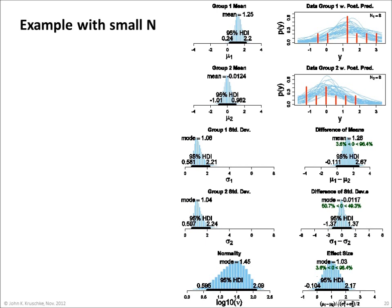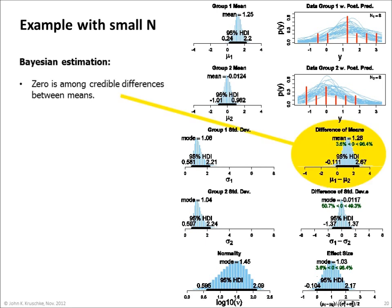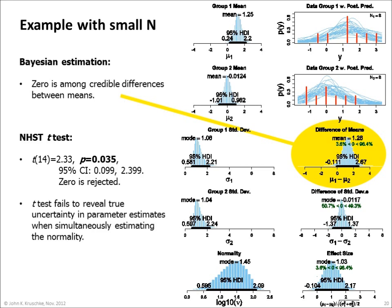Here's an example with small sample sizes — only eight in each group — as shown in the red histograms in the upper right of this figure. Bayesian estimation shows that a difference of zero is among the 95% most credible differences between means. The classical t-test, on the other hand, says p equals 0.035, which implies that zero should be rejected. In this case, the t-test fails to reveal the true uncertainty in the parameter estimates when simultaneously estimating the normality of the data.